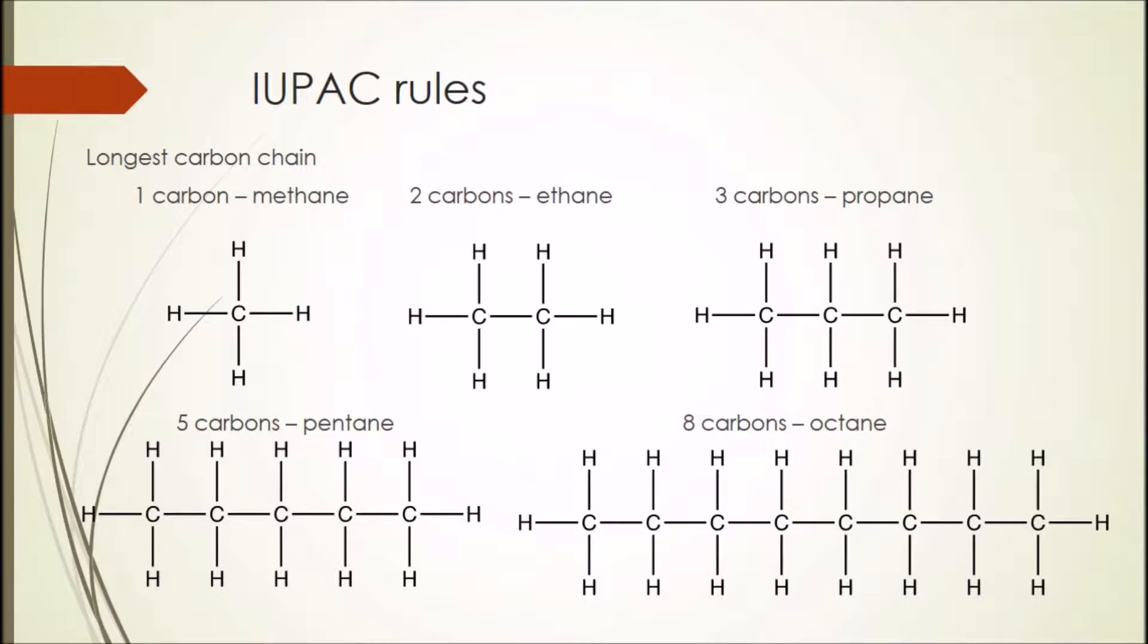Now we can work out the structure of the compound by looking at the name and the name by looking at the compound. For example, if we look at the display formula for this compound, pentane, you can count that there are five carbons in the longest chain so the prefix must be pent. And there are only hydrogen and carbon atoms and no double bonds, so the compound must be an alkane given the suffix ane, and the overall compound name pentane.